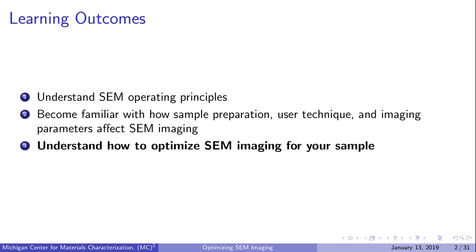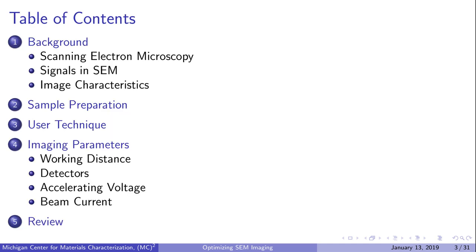This lesson is intended to foster a practical understanding of scanning electron microscopy. We won't discuss detailed theory in the interest of time. If you'd like to learn more about the theory, please see the references at the end. As an overview, we'll start with a quick background on SEM, the signals used to generate images, and image characteristics in general. Then we'll discuss sample preparation, user technique, and imaging parameters, and how these affect imaging. Throughout this lesson, we'll examine real-world examples of SEM images that demonstrate the concepts being discussed. Finally, at the end, we'll recap the main takeaways.